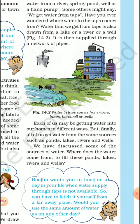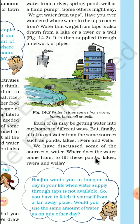As shown in figure 14.2, water in taps comes from rivers, lakes, bore wells, or wells. Each of us may be getting water into our homes in different ways, but finally all of us get water from the same sources — such as ponds, lakes, rivers, and wells. We have discussed some sources of water. Where does the water come from to fill these ponds, lakes, rivers, and wells?